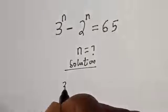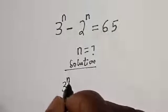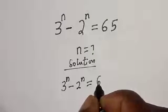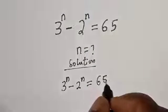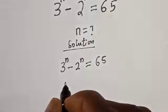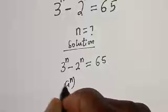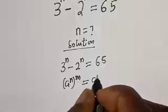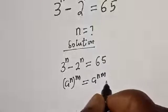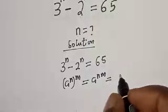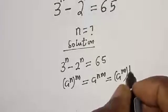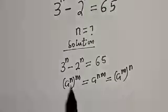We have the given question: 3 raised to power n minus 2 raised to power n is equal to 65. Take note of this exponential rule: a raised to power n, to the power of m, is equal to a raised to power n·m, which is equal to a raised to power m to the power of n.